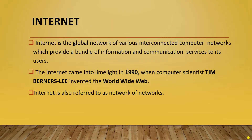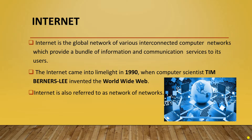First is internet. What is internet, children? Internet is the global network of various interconnected computer networks which provide a bundle of information and communication services to its users. The internet came into limelight in 1990 when computer scientist Tim Berners-Lee invented the World Wide Web, or www. Internet is also referred to as network of networks.